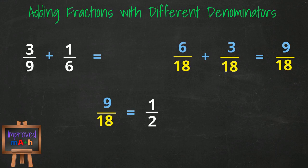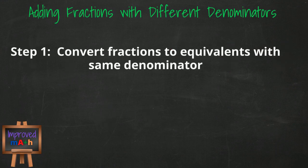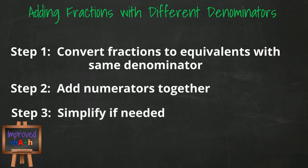So let's talk about what we just did. When adding fractions with different denominators, the steps are as follows: convert the fractions to equivalent fractions using the least common multiple and make the denominators the same, then add the numerators and simplify if needed.